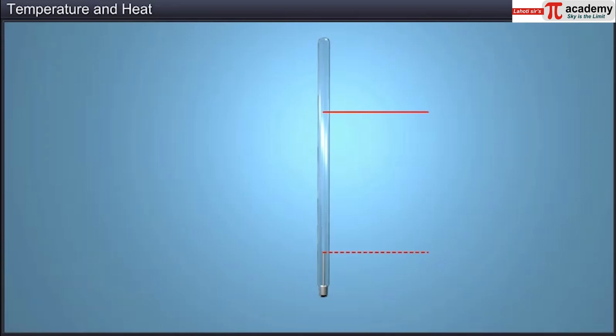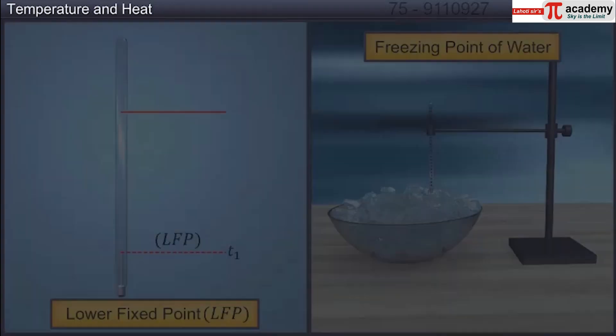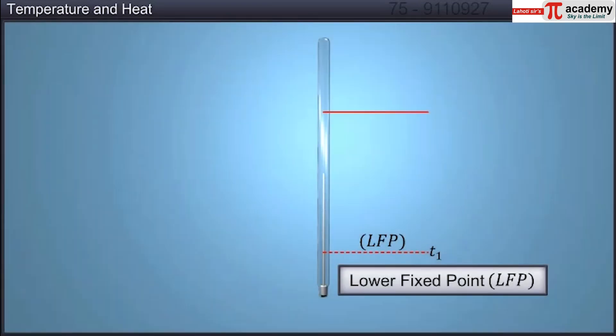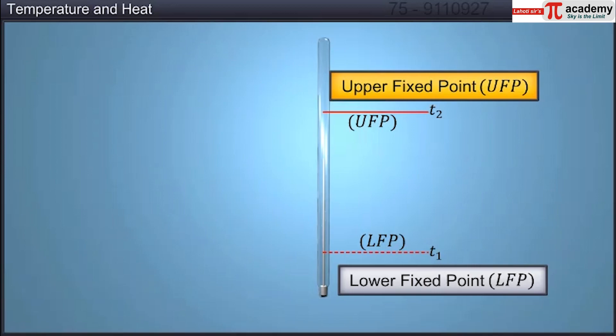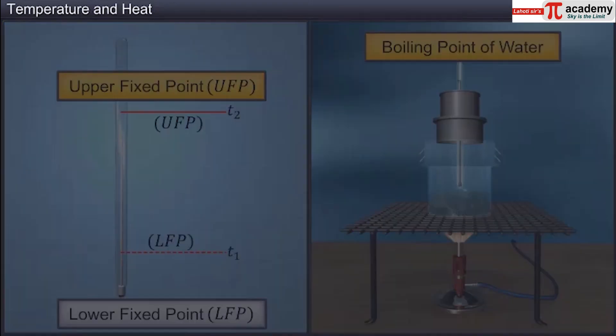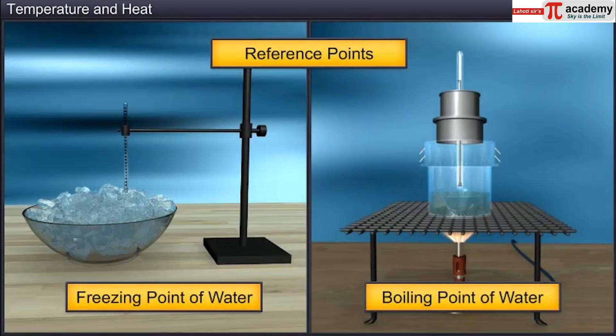Among the two reference temperatures, one is considered the lower fixed point, LFP, at T1, which is the freezing point of water or ice point, and the other one is the upper fixed point, UFP, at T2, which is the boiling point of water or steam point. These two reference points used in many standard scales.